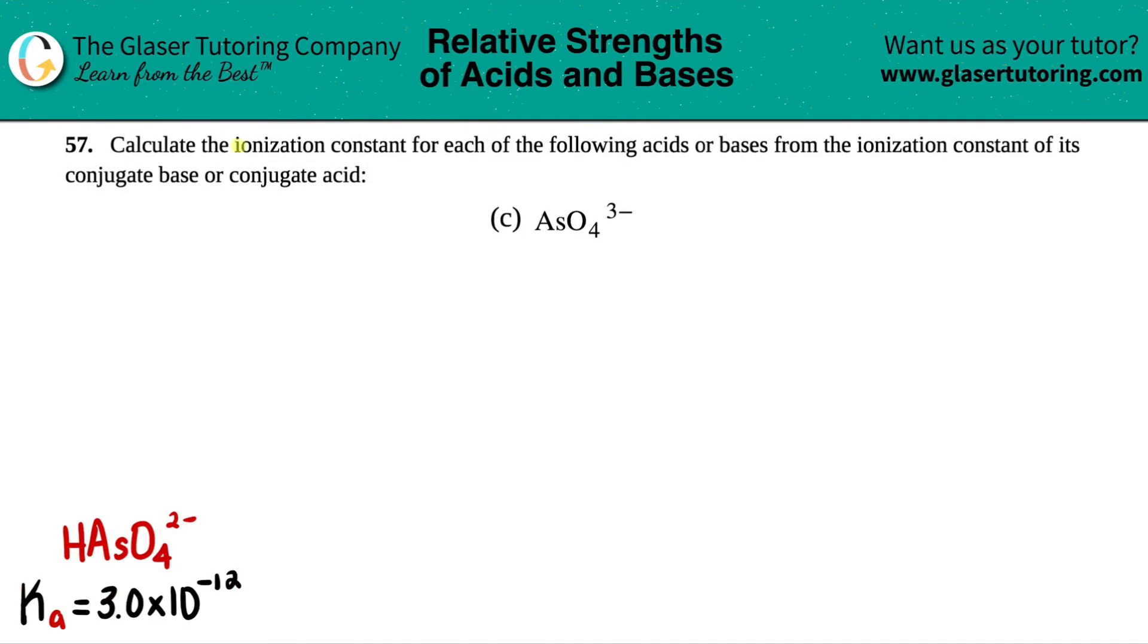Number 57. Calculate the ionization constant for each of the following acids or bases from the ionization constant of its conjugate base or conjugate acid. And then we have letter C.